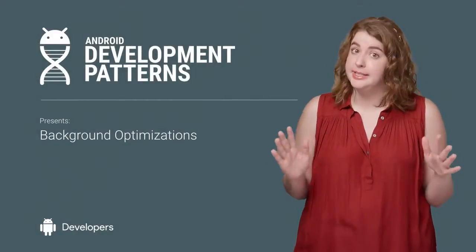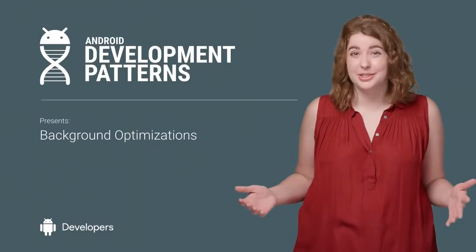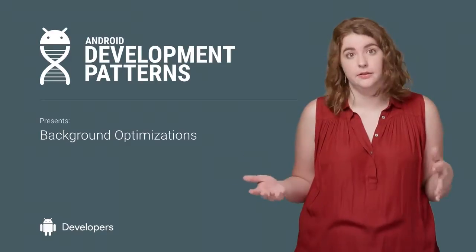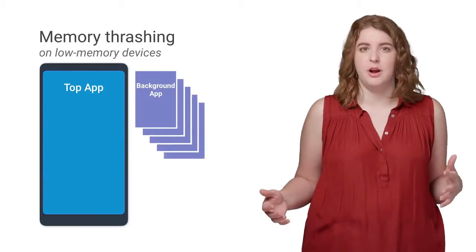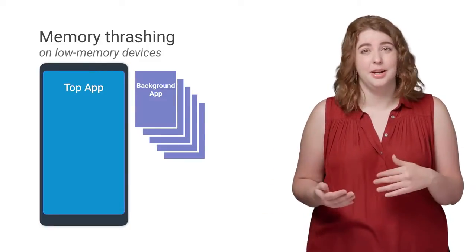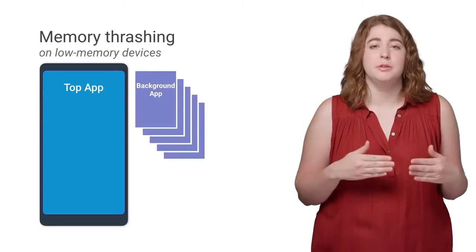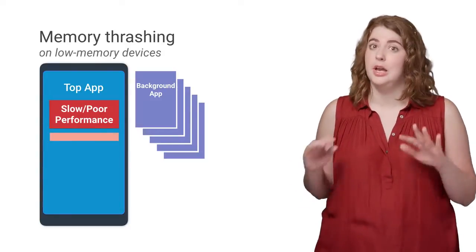Modern Android devices have, potentially, lots of apps with background services, and this is exactly as it should be. But it can be problematic when each of those services just runs willy-nilly all over the user's processor. What we see happening on devices in a low memory situation is that there is often a number of background services running, but there isn't enough memory for all of them. When this happens, the operating system must swap a lot of processes in and out of RAM, known as memory thrashing. This reduces the overall system performance, which manifests as poor performance for the app the user is actually trying to use.